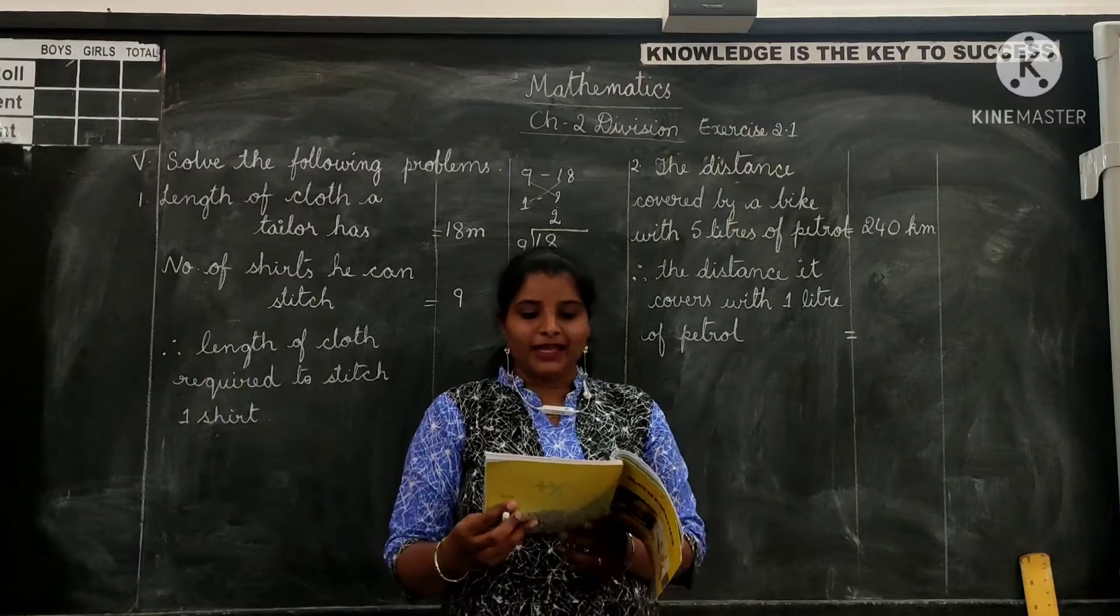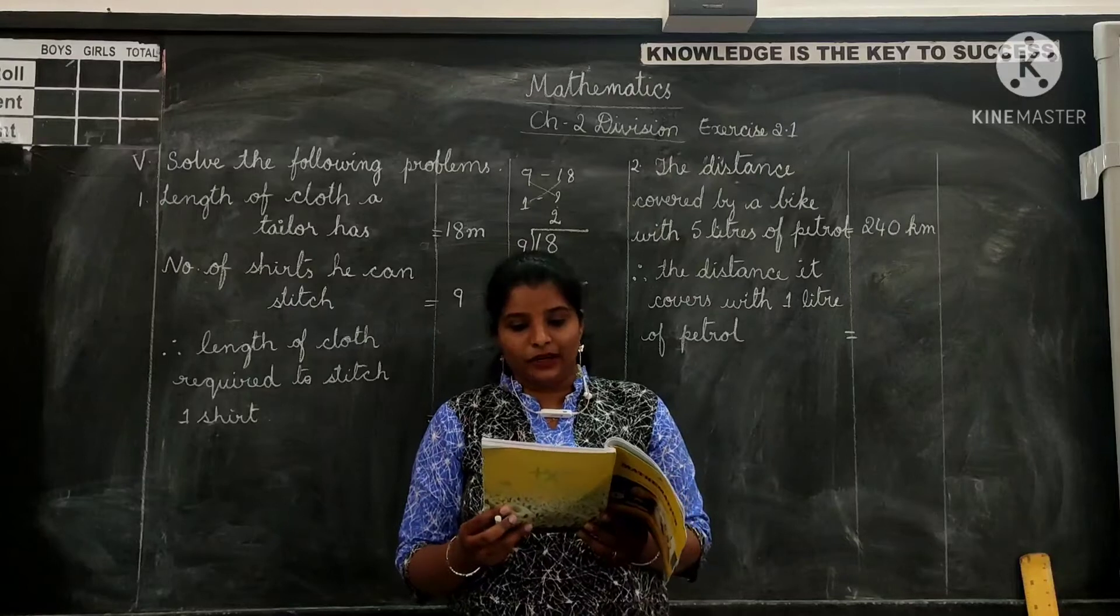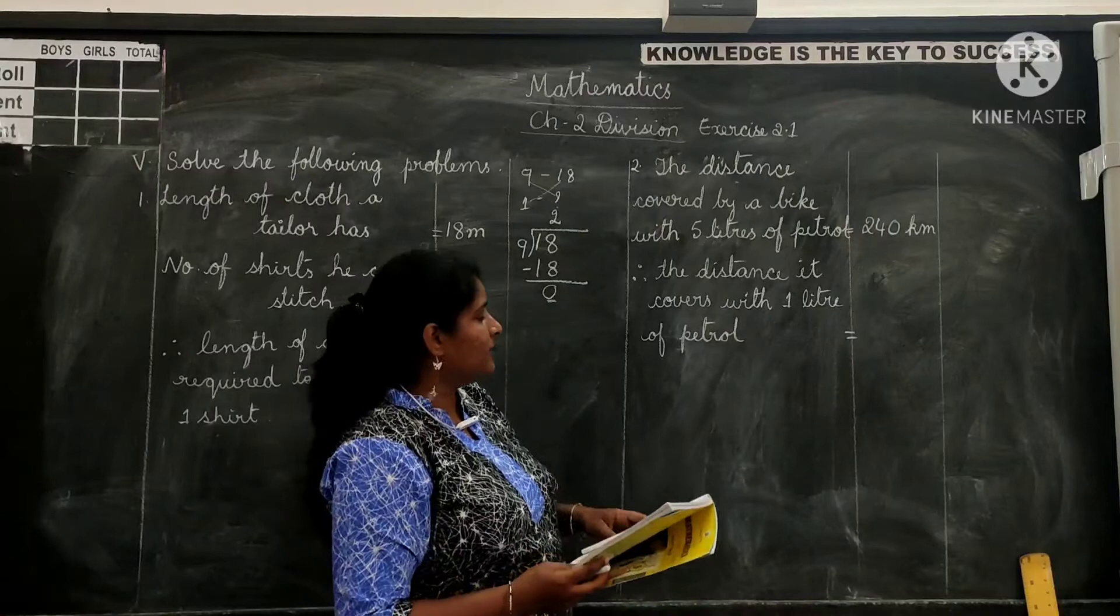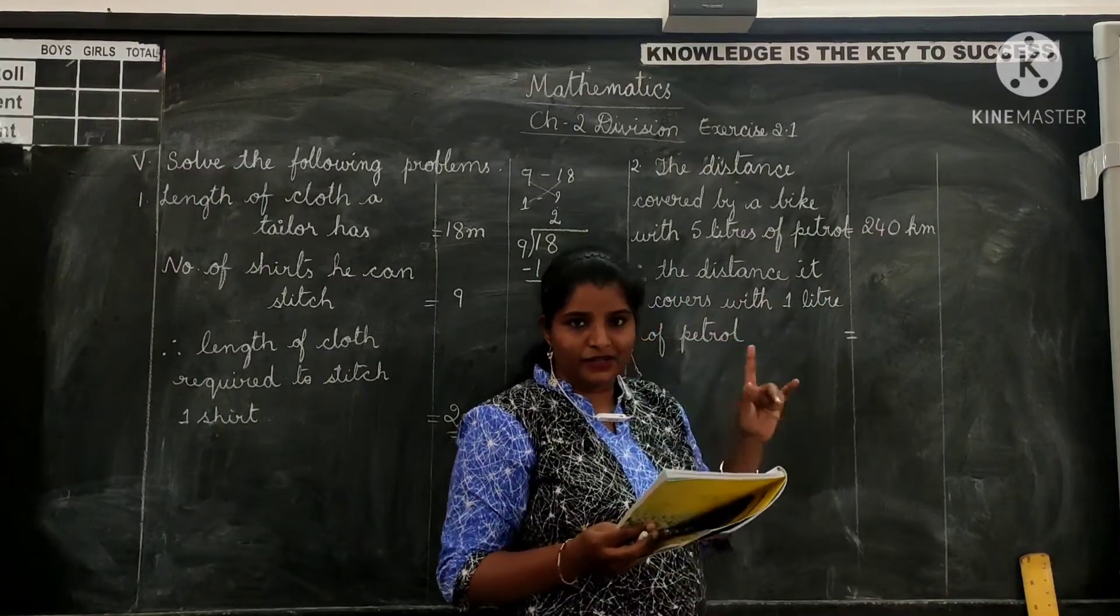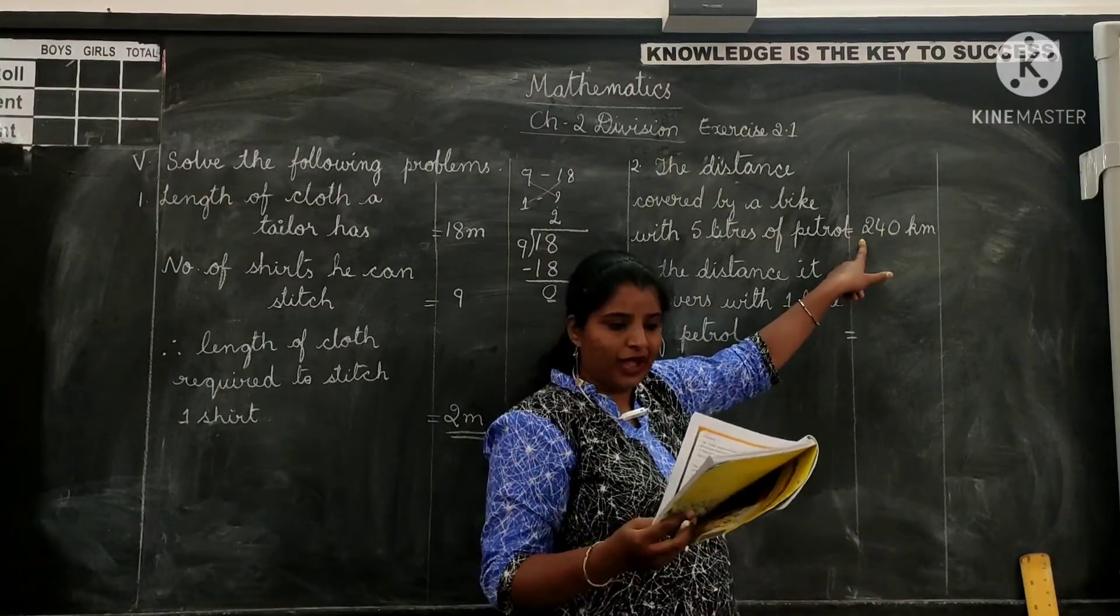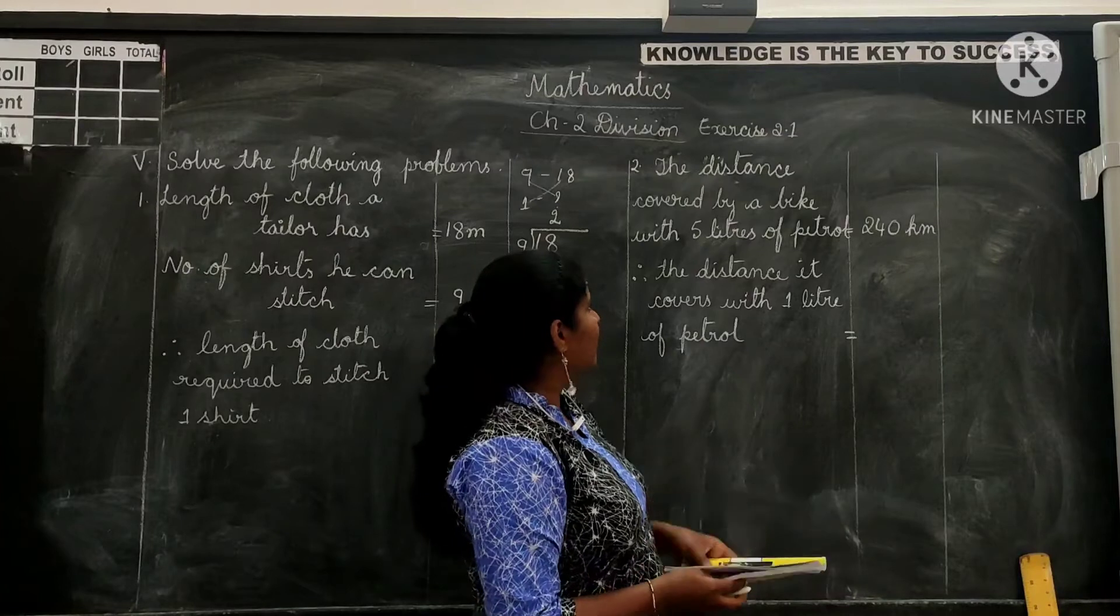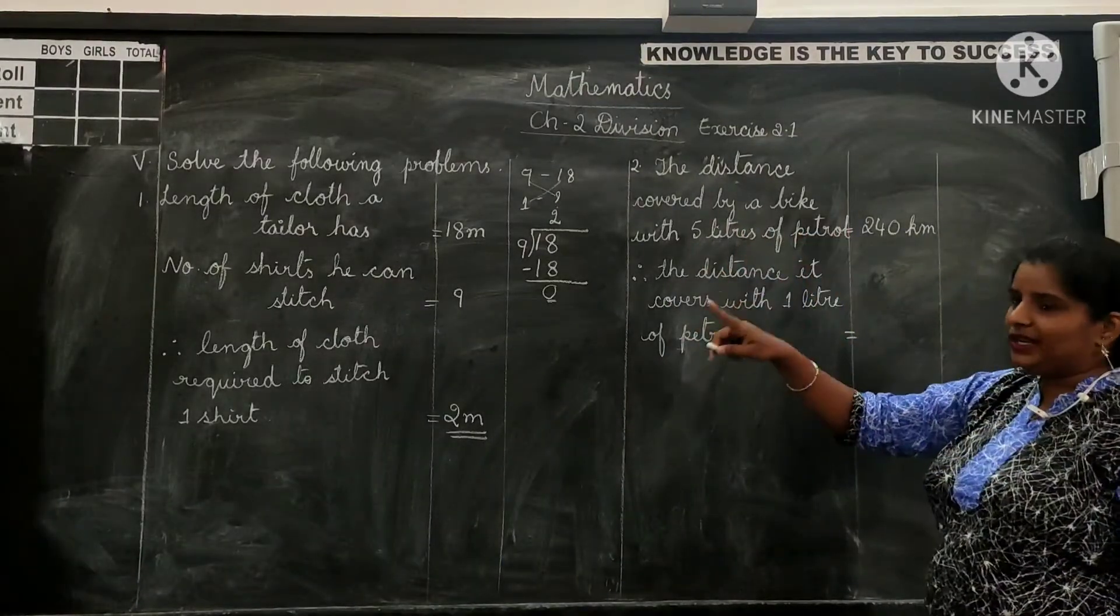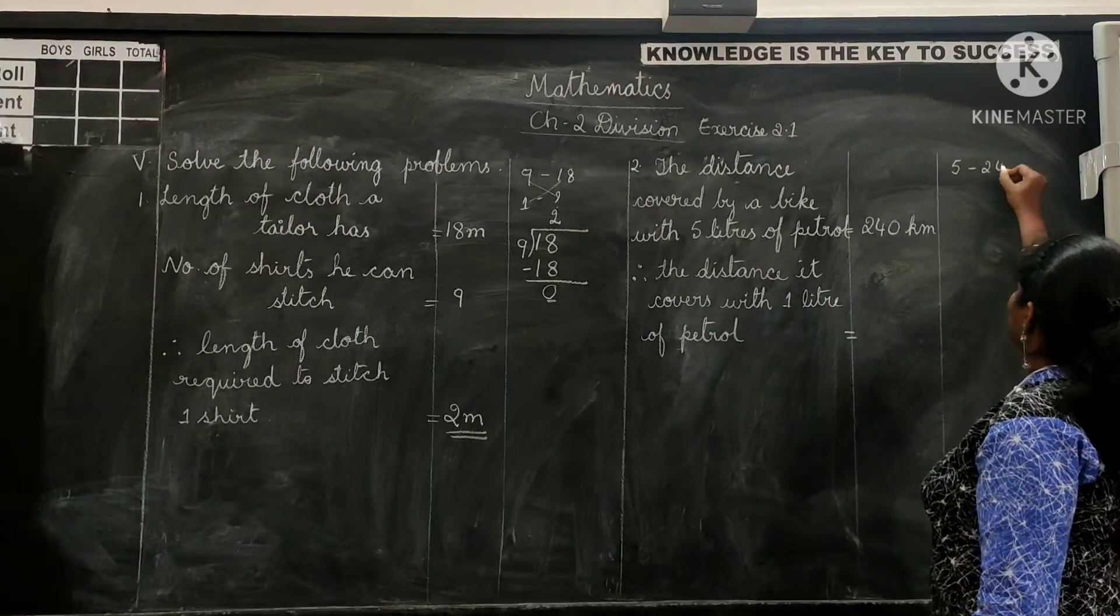Next problem: A bike can cover 240 kilometers with 5 liters of petrol. Find how many kilometers does it cover with 1 liter of petrol. Now the problem is a bike with 5 liters of petrol covers 240 km. We are asked to find how many kilometers does the bike cover with one liter of petrol. So we have already written statements here on the board. The distance covered by the bike with 5 liters of petrol is 240 km.